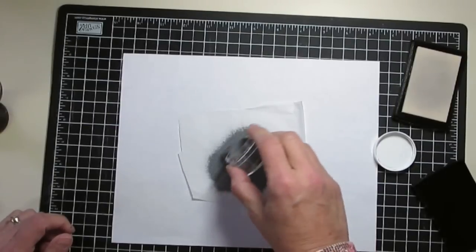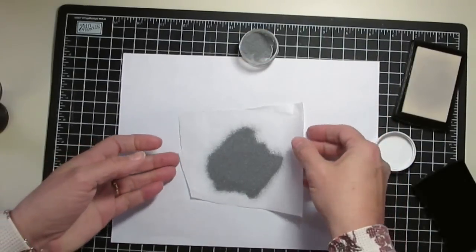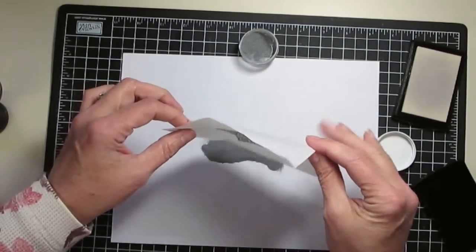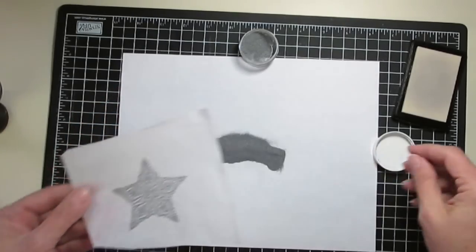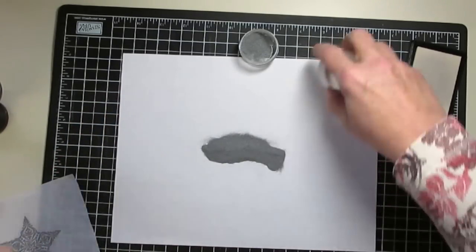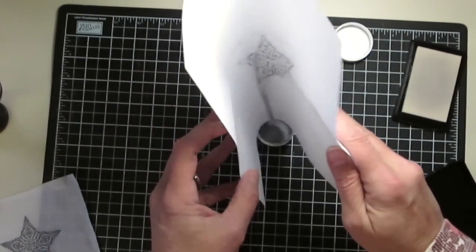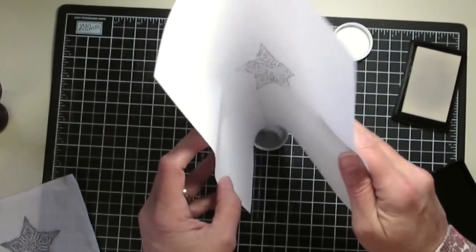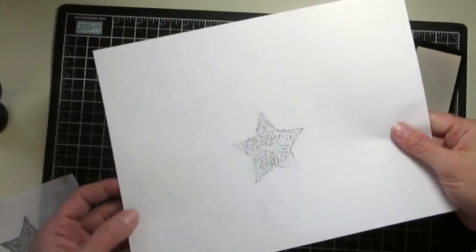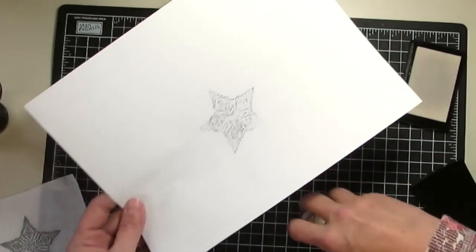So you're going to stamp with Versamark and then I sprinkled it with silver embossing powder and you'll see the star image on the tissue paper. I'm going to move this out of the way. Now I use that piece of paper on purpose so that I can dump it all back into the jar. I just want to show you quickly what happens with that tissue paper. See that Versamark goes right through.